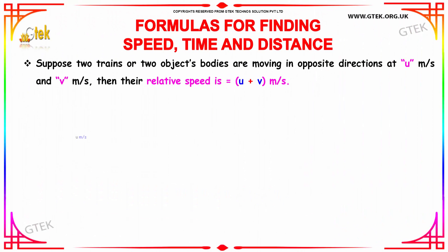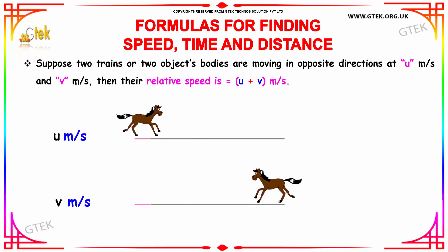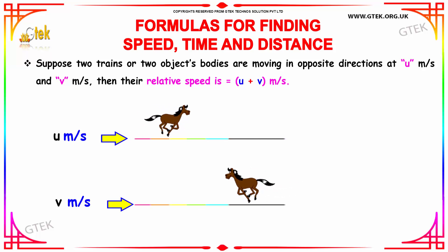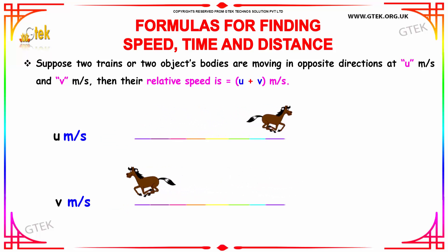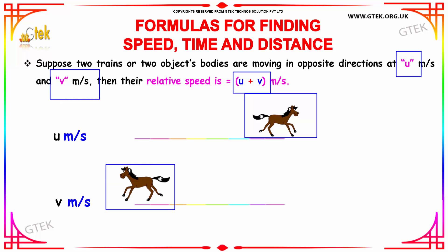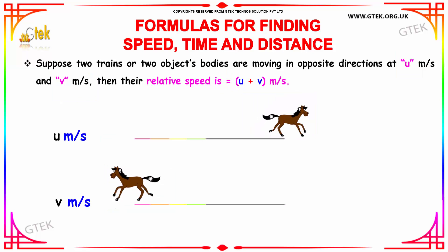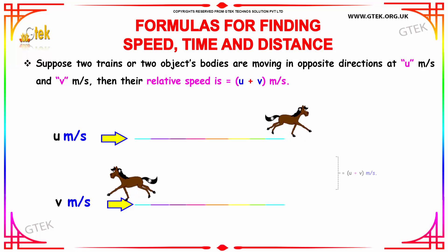If the two objects are moving in opposite directions, in that case we need to use the formula u plus v meters per second, where u is the speed of the first object and v is the speed of the second object. The relative speed is u plus v meters per second.